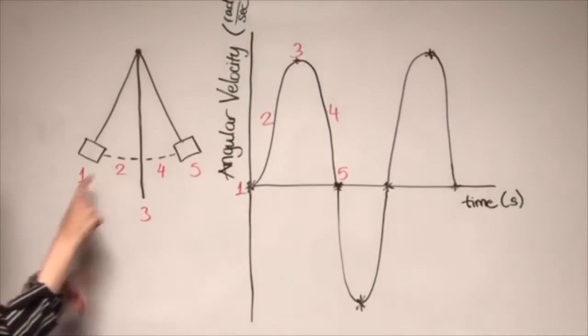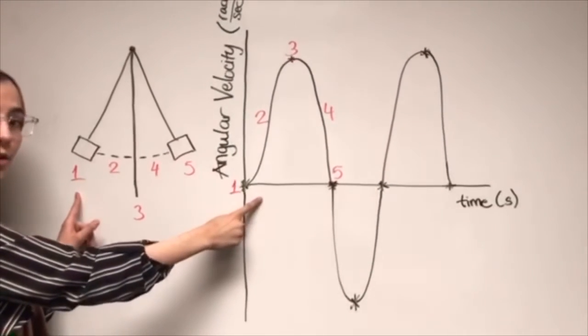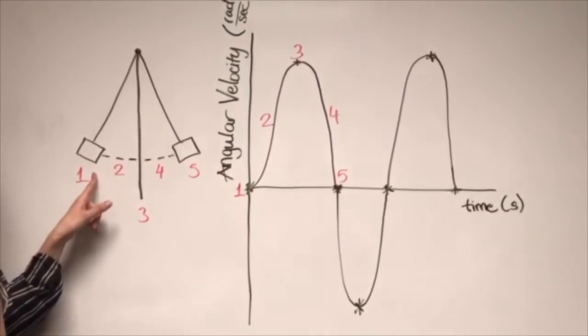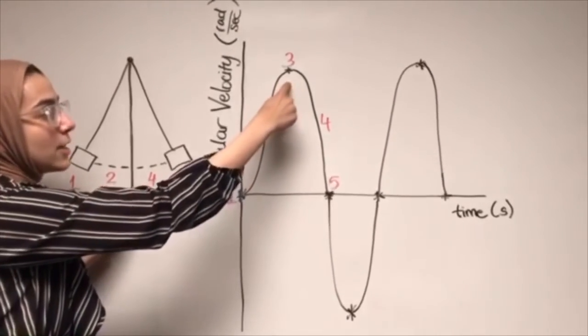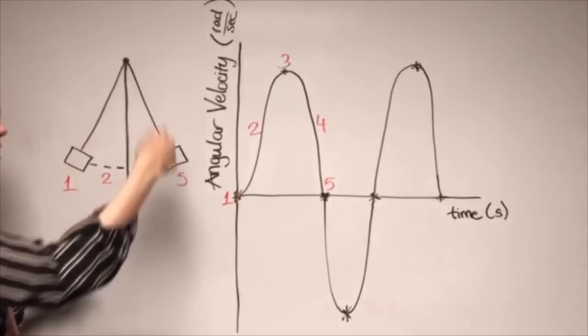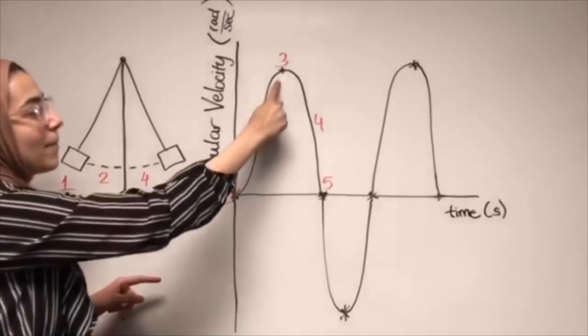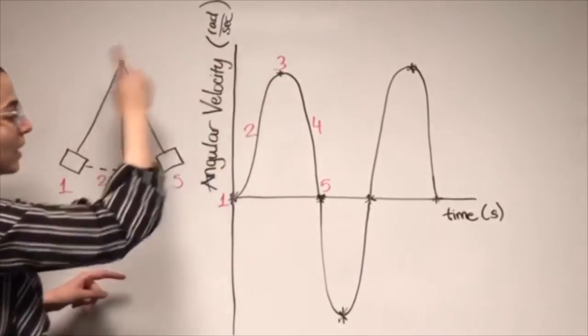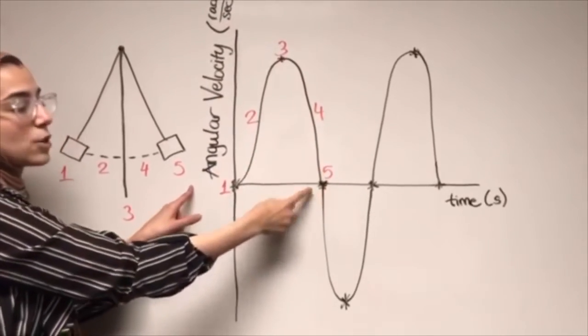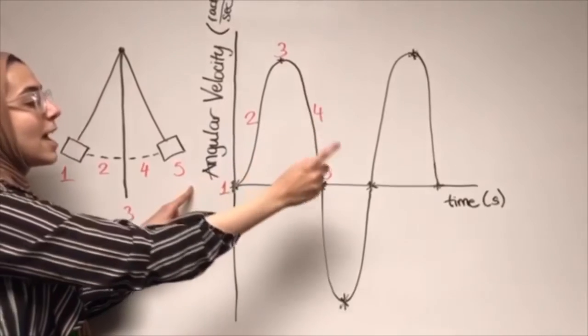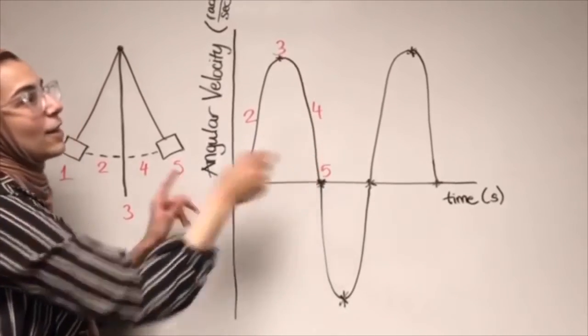The first point 1 is where angular velocity is zero. This is when the swing is being held. Point 2 is shown where the velocity is increasing as the swing is released. Point 3 is the midpoint on the pendulum and the max peak of the graph. Point 4 is when angular velocity decreases, and point 5 is when the swing reaches the other end and is zero at the angular velocity again.